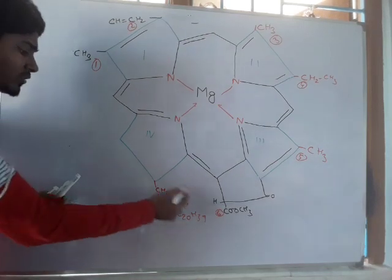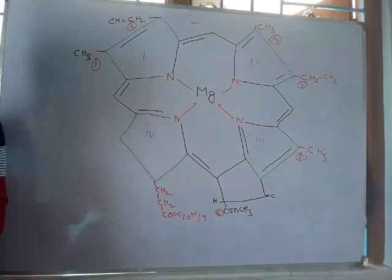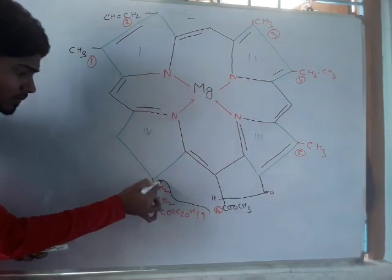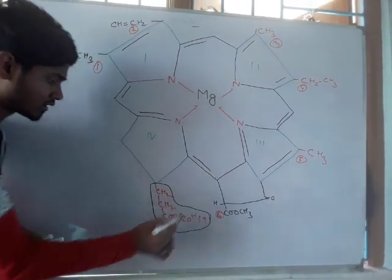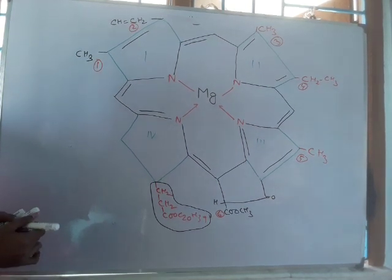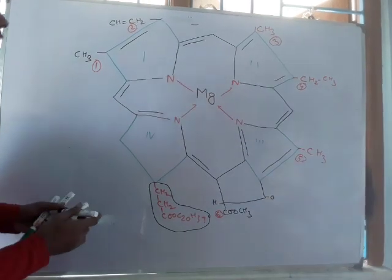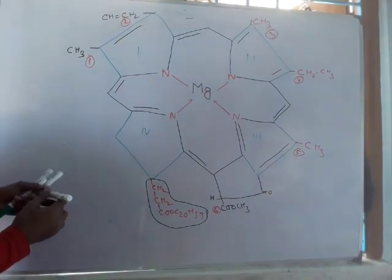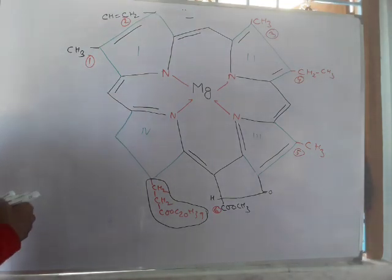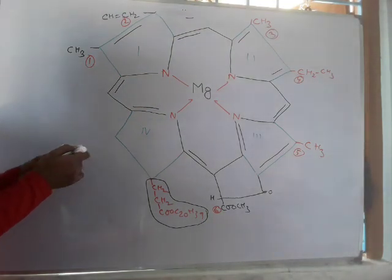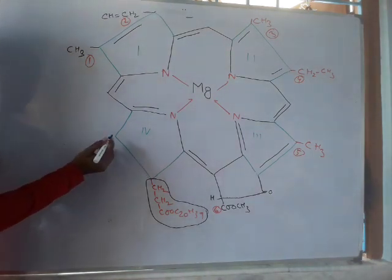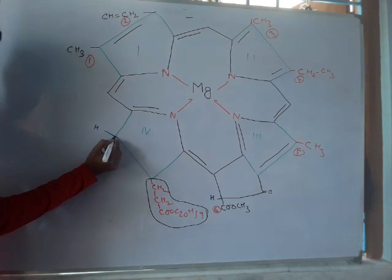Hope you can see this. This is the phytol chain, which is the lipophilic tail of this porphyrin structure. And this is the hydrophilic head of the porphyrin. So magnesium is the hydrophilic head of the porphyrin structure. And then you have this H and CH3.